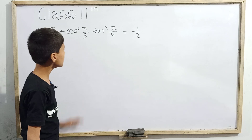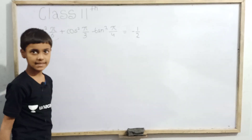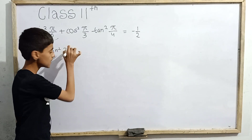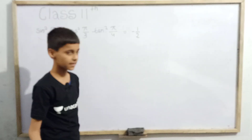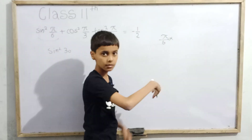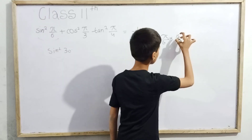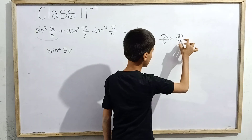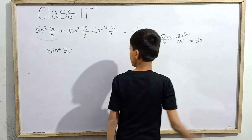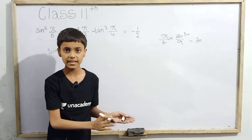First, sin²(π/6) — we can also write it as sin²(30°), because π/6 is 30 degrees. If we want to convert π/6 from radians to degrees: π/6 × 180/π — π cancels — and that gives us 30 degrees.